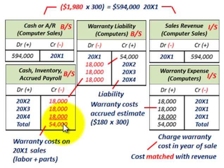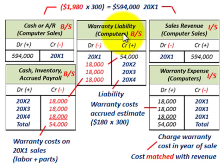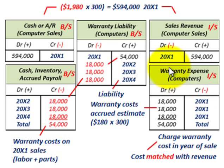You can see the difference between the two methods: the expense warranty method requires setting up a warranty liability, while the sales warranty method sets up an unearned revenue — both are liability accounts, but handled differently. The expense warranty charges all warranty expense in the year of sale, while the sales warranty earns the revenue over the warranty period. That sums up extended warranties using the accrual methods.